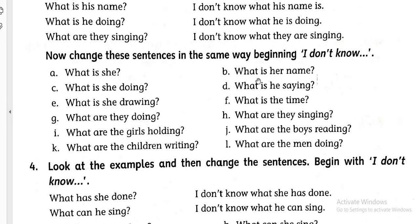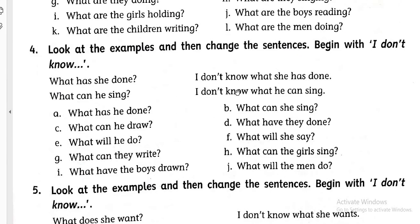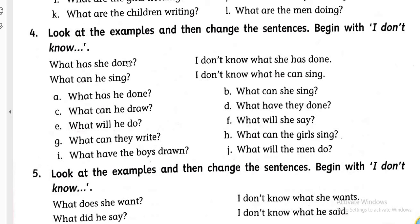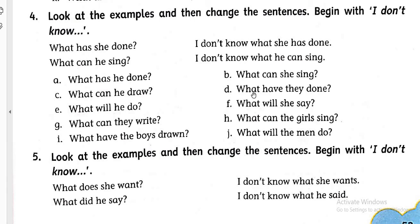Now let's see question number four. Look at the examples and then change the sentences, beginning with 'I don't know.' See the example: 'What has he done?' — 'I don't know what he has done.' 'What can he sing?' — 'I don't know what he can sing.' In the answer we rearrange the words of the question. Let's see question number D: 'What have they done?'